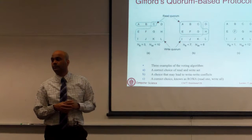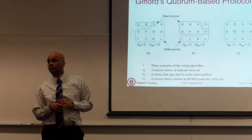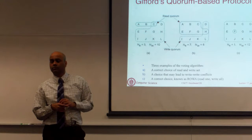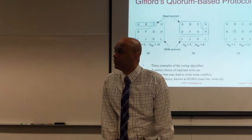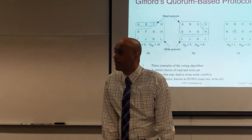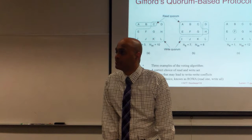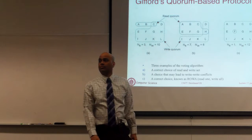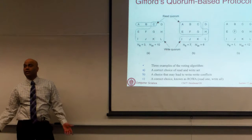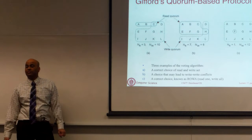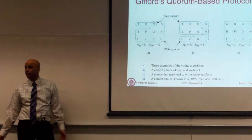A student asked: since we satisfy the property that n_r plus n_w is greater than n, why not just find the server with the highest version number and return that file? The answer is you are asking a slightly different question — you could just pick from the read quorum the one with the most recent version. The reason we want agreement is correctness under failures and many more dynamics than what this simple picture shows.